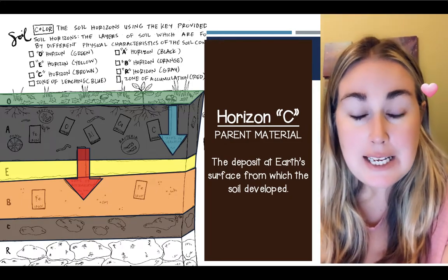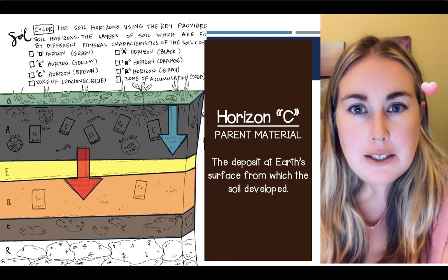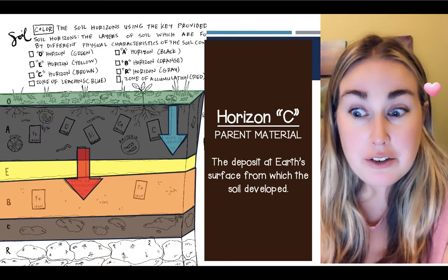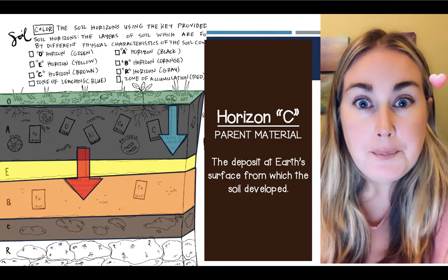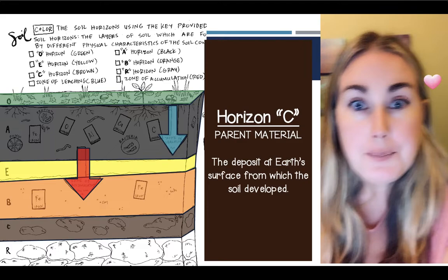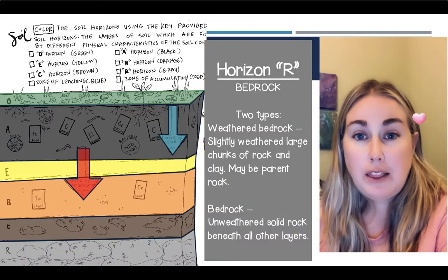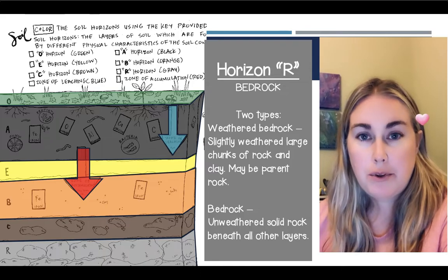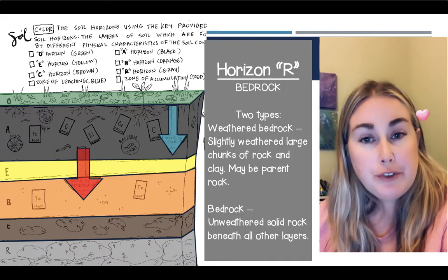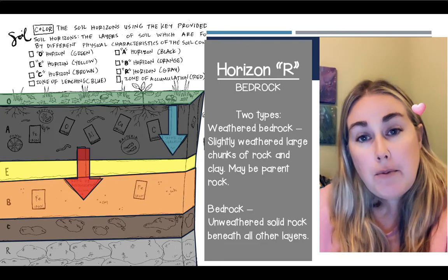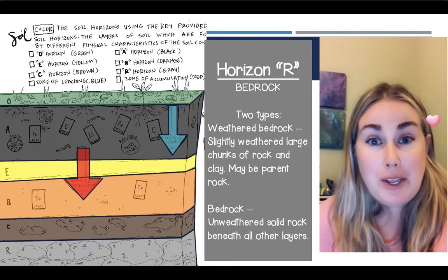Horizon C is the parent material. This is from the Earth's surface and what the soil actually developed from. Last but not least, we have Horizon R, or the bedrock. The bedrock can be two different types: either weathered bedrock or unweathered bedrock. Read about them here.